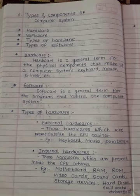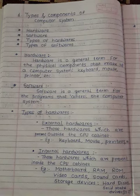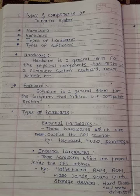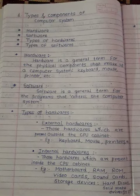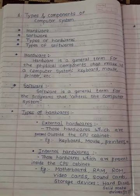We will study about the external hardware in our next chapter on input and output devices. Now internal hardware. Those hardware which are present inside the CPU cabinet are called internal hardware. The CPU is the brain of the computer — it must be present to run a computer system, and the hardware inside the CPU cabinet are called internal hardware.